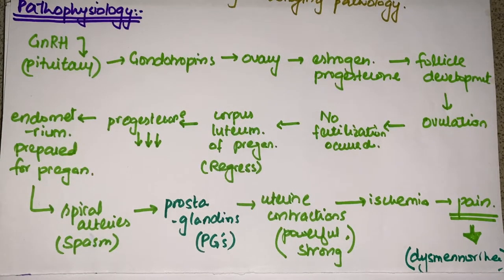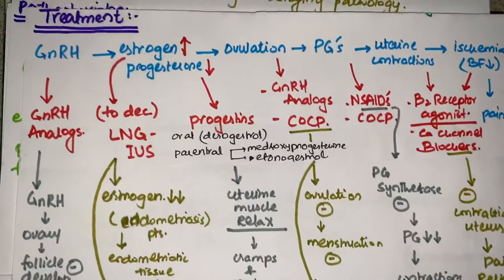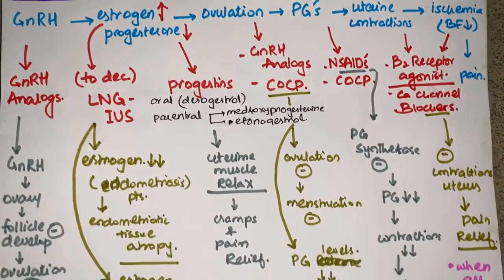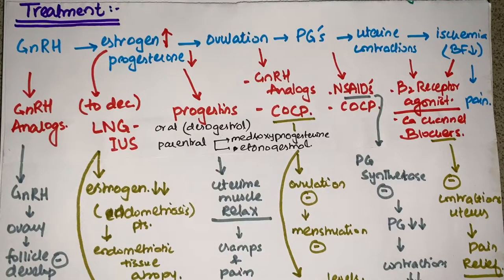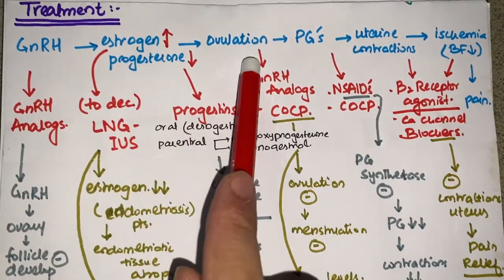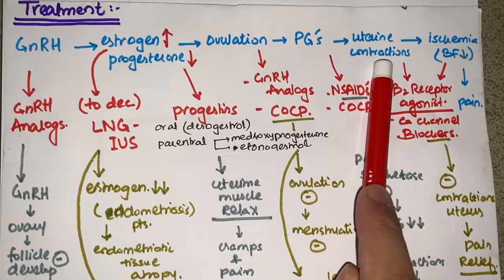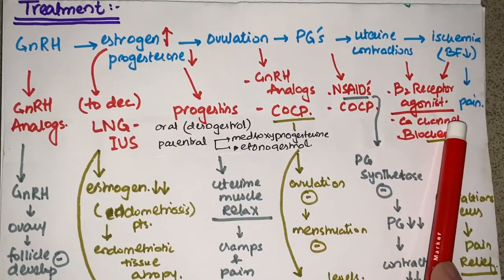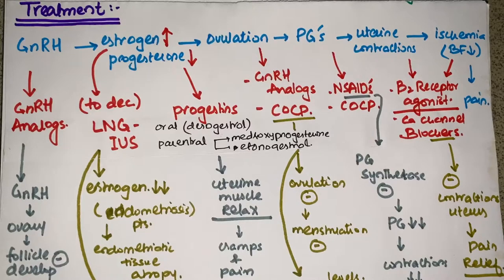I have made a mnemonic to memorize the treatment by keeping this pathophysiology in mind. To recap the pathway: GnRH causes the ovary to produce estrogen and progesterone; ovulation occurs; prostaglandins are released; uterine contractions lead to ischemia and decreased blood flow, ultimately causing pain. There will be a series of drugs that act on each of these steps respectively.